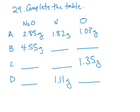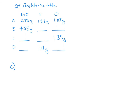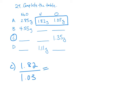Let's go ahead and take sample C and set up an equivalent fraction. We're going to use the ratio of nitrogen to oxygen from sample A to set up our first equivalent fraction — putting nitrogen on top. For C, we don't know what nitrogen is, so that's going to give us the variable on top, and 1.35 is going to be the oxygen on the bottom. Now we're going to cross multiply 1.82 times 1.35, which gives us a product of 2.457 grams.